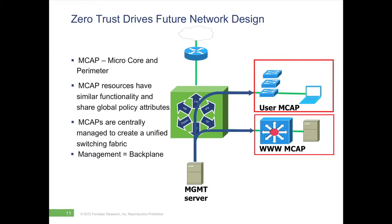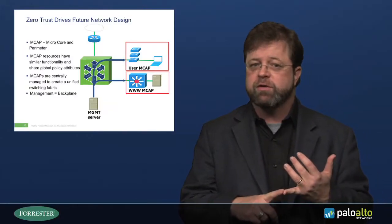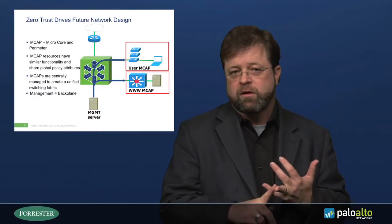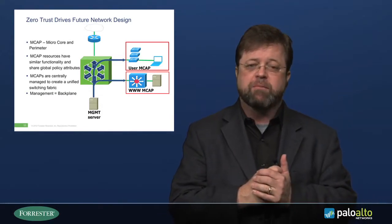The most important concept in Zero Trust, beyond the segmentation gateway, is that we define something called an MCAP. An MCAP takes advantage of the old DMZ types of technologies that we're used to using, but we use it in a different way. We segment off an area of the network and create smaller micro core switching infrastructures that allow us to parallelize the switch infrastructure and make it more efficient. We send a particular type of traffic, a particular protocol or type of data, to that MCAP, and we have a micro perimeter surrounding that data by default. So we have a more efficient switching design and a more secure network design by default — and that's what the MCAP does for us.